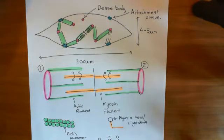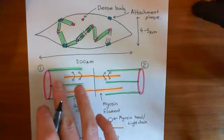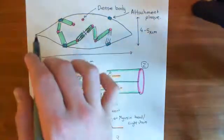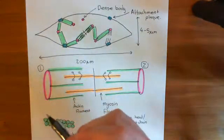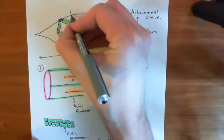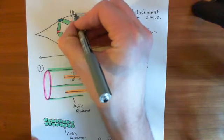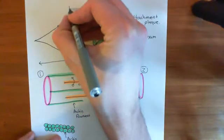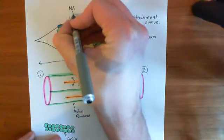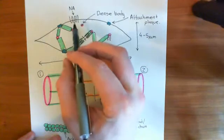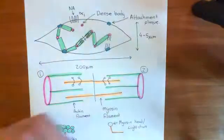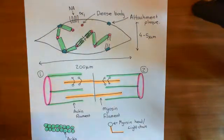We want to look at what actually causes smooth muscle cells to contract, and the mechanism by which the myosin filaments climb up the actin filaments. Some stimulus will come into the smooth muscle cell — an example would be noradrenaline, which is capable of producing contraction. Noradrenaline binds to a receptor on the smooth muscle cell, a G-protein coupled receptor — specifically the alpha-1 adrenergic receptor.